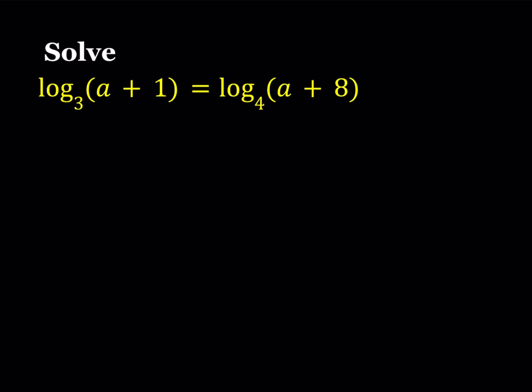If you had the same base, you could safely say that whatever we're logging, they're equal to each other. Or if we had bases that are relatable like 2 and 16 or 27 and 81, then we could easily use that property. If you have log base b of x equals log base b of y, we can safely say that under certain conditions like b has to be greater than 0 and different from 1, x and y are both positive, then this would imply that x equals y.